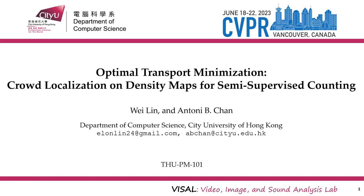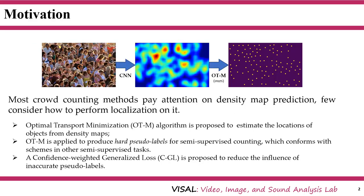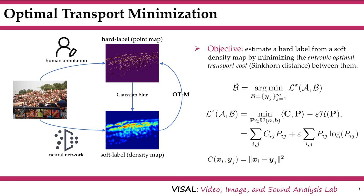My name is Wei, and I am delighted to introduce our paper titled Optimal Transport Minimization, for localization on density maps for semi-supervised counting. We present an algorithm called Optimal Transport Minimization (OTM) for locating individuals based on density maps. This algorithm aims to bridge the gap by leveraging density maps to facilitate precise localization within crowded scenes. We apply the OTM algorithm in the context of semi-supervised counting by incorporating it into a teacher-student framework. Our confidence-weighted general label loss is introduced to reduce the influence of noisy pseudo-labels and enhance robustness. OTM converts a density map to a point map by minimizing the optimal transport costs between soft labels and hard labels.